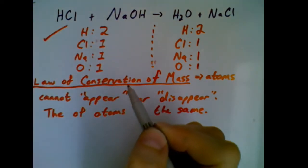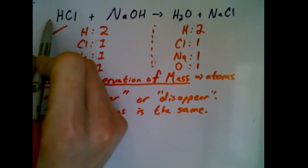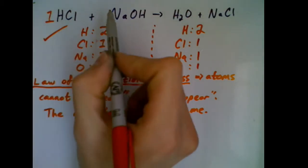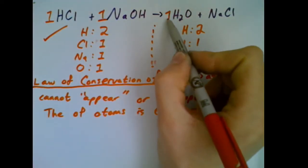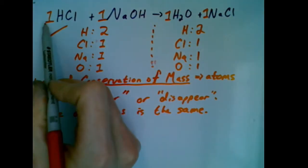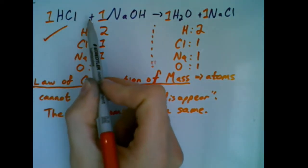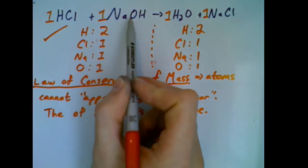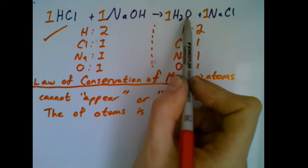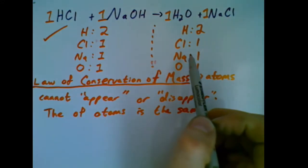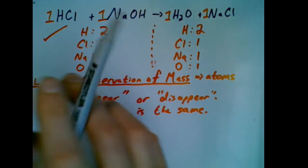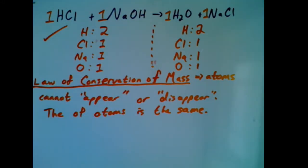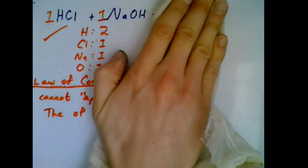We actually have the same number of atoms on each side. This is balanced. What you could do if you wanted was represent that with numbers in front of each of those. This is basically saying I need one HCl combined with one NaOH to make one water and one sodium chloride. I'm going to clean up this board and we're going to work through a couple more examples so we can see how we would do this in slightly more complicated reactions.